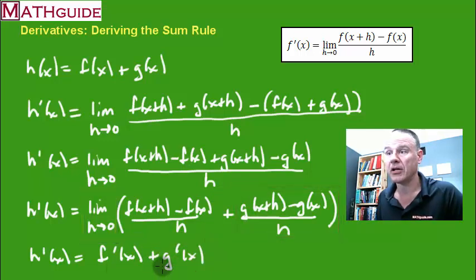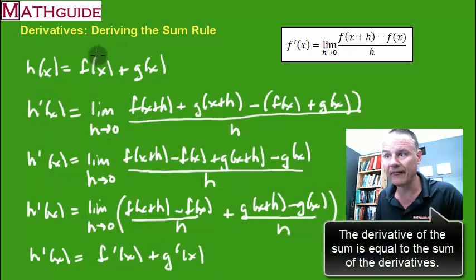And there you have it. So if I really want to take the derivative of a sum, it's equal to the sum of the derivatives. And that's what we see here. That's all there is to it.